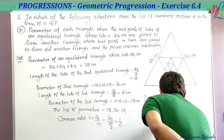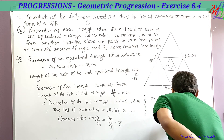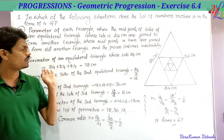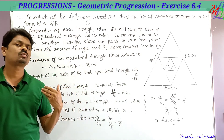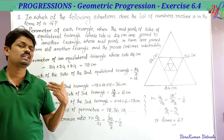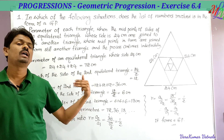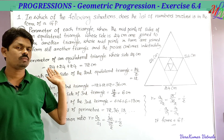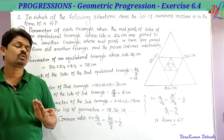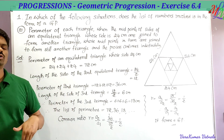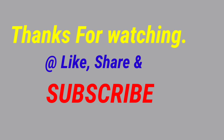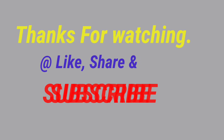We have now completed all three parts of the first problem. In each case, we wrote the list of numbers from the given situation and checked whether the common ratio was constant to determine if it forms a geometric progression. In the next class we will solve the second problem.